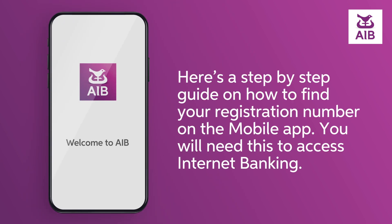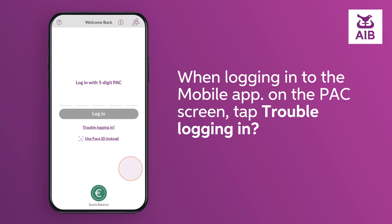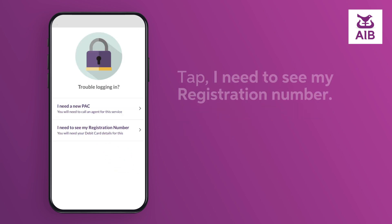Here's a step-by-step guide on how to find your registration number on the mobile app. You will need this to access internet banking. When logging into the mobile app, on the pack screen, tap 'Trouble logging in,' then tap 'I need to see my registration number.'